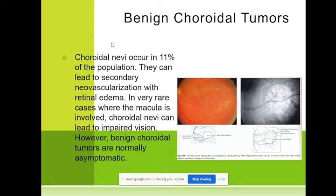When we have a patient with such a nevus, I check every three to six months. 11% of the population can have a nevus — you can usually see the nevus in the retina, but we observe it and look to see whether it is becoming bigger or not.